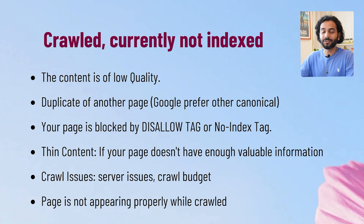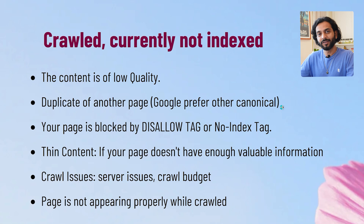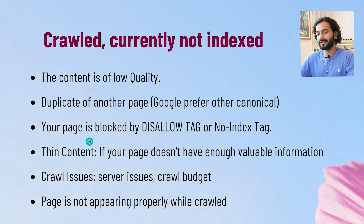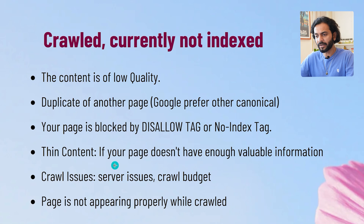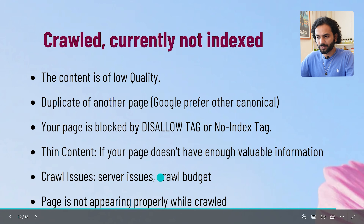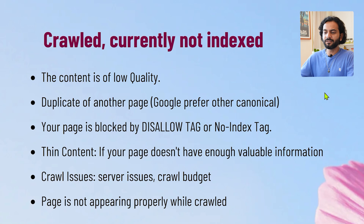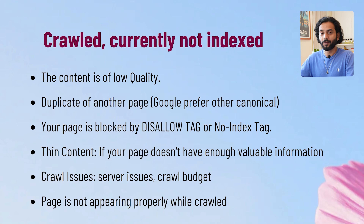I created a complete video on canonical pages — check the description if you want to learn more. Third, your page may be blocked by a disallow tag or no-index tag. Thin content, crawl issues, server issues, crawl budget limitations, and pages not rendering properly while crawled are also causes. I'll show you how to spot the rendering issue in the live Search Console demo.